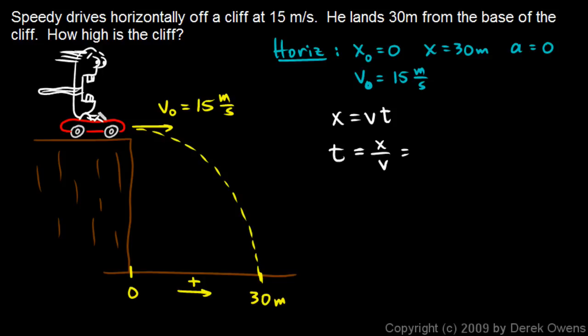T is x over v. And I just put in the numbers, this is easy, 30 meters over 15 meters per second is 2 seconds. And that should strike you as basically obvious. If he's moving at 15 meters per second, then to go horizontally 30 meters, it must take 2 seconds.